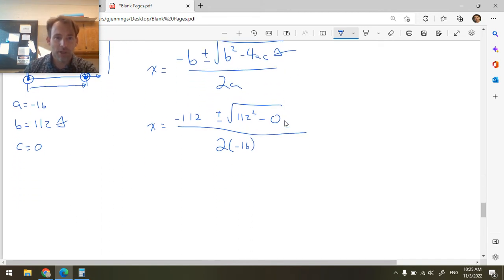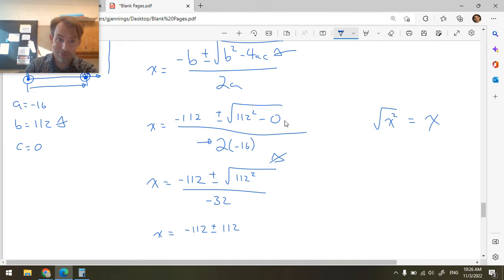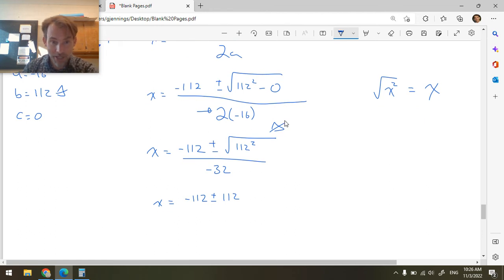So it's just 112 over 2 times -16. Okay. So now let's keep going. We're going to have x = -112 ± √(112²). Okay. The square root of x² is equal to x. So this is just equal to 112, all right? Over -32. Let's just work out the denominator there. All right. So x = -112 ± 112. Notice that that will give us a 0 if we use plus for one of them. Minus for the other one is going to give us the other root. All divided by -32.